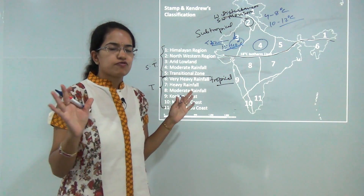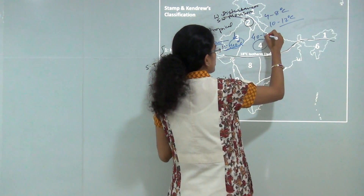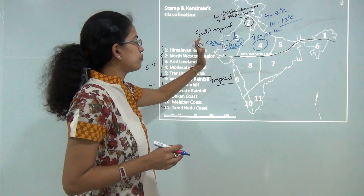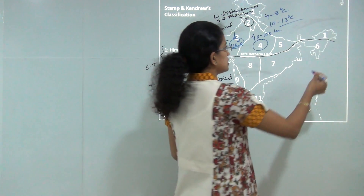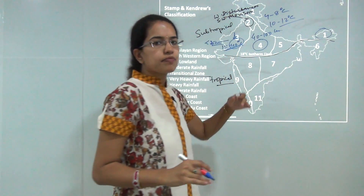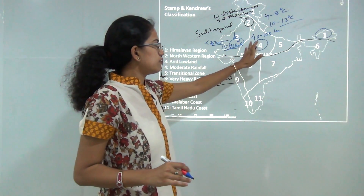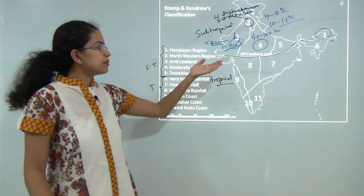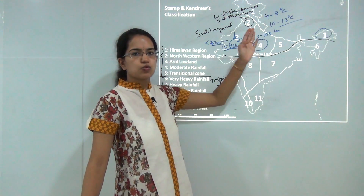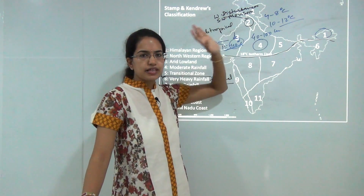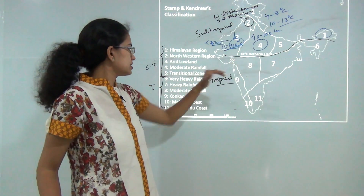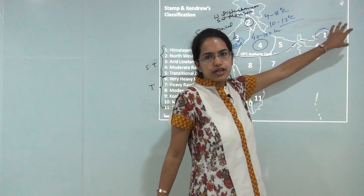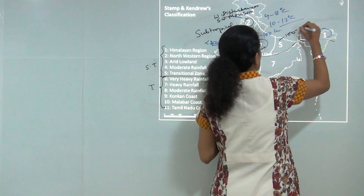Region 4 is the region of moderate rainfall — mainly the Ganga Plains — with 40 to 100 centimeters of rainfall. Rainfall increases from west to east, with Cherrapunji and Mawsynram in this belt. Temperature in January is 15 to 18 degrees Celsius, spiking to 30 to 35 degrees in summer. Region 5 is the transitional zone between moderate and very heavy rainfall, with 100 to 150 centimeters of rainfall.